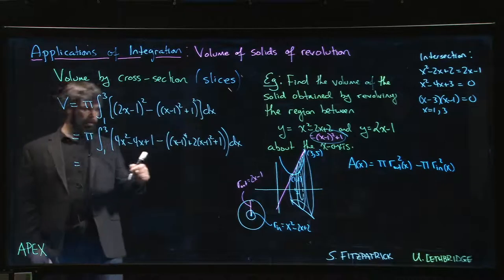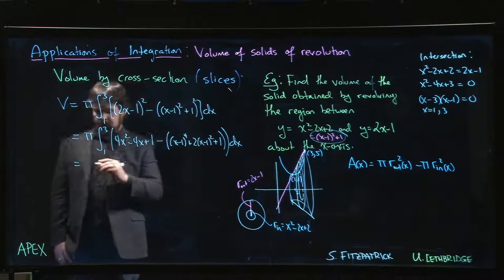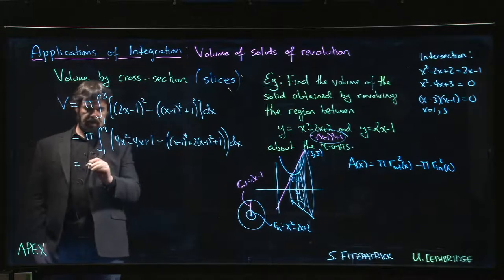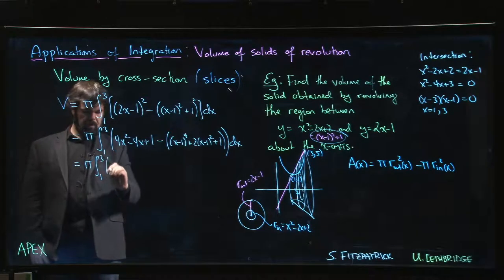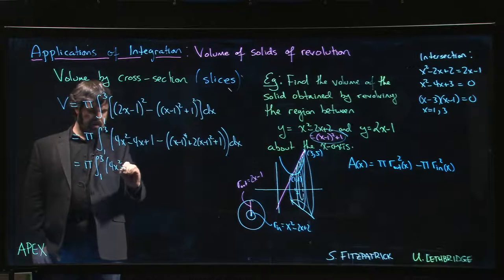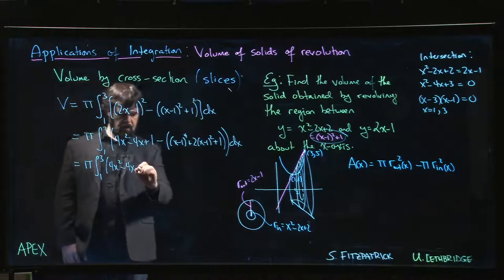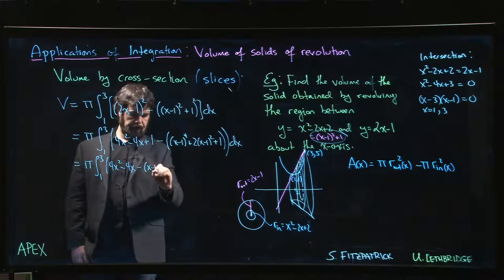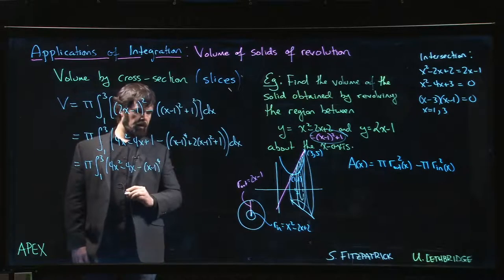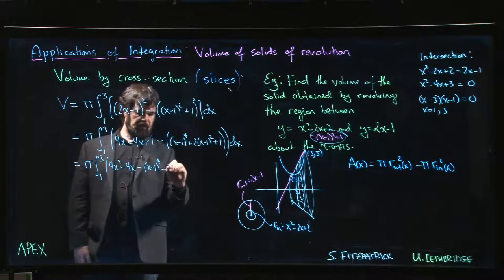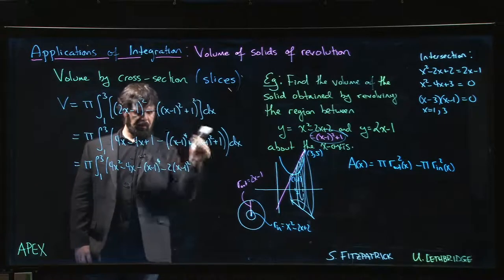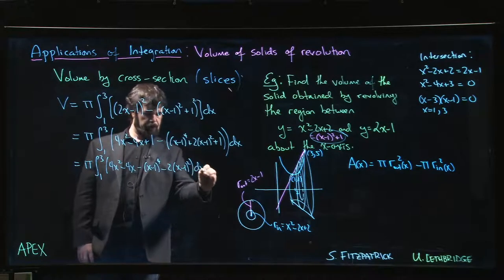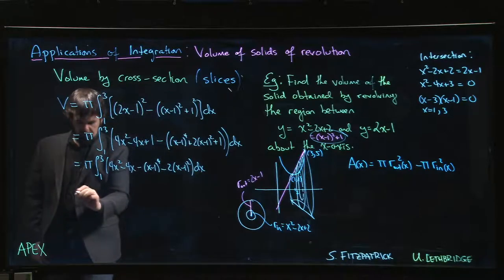Cross term is 2 times (x minus 1)² and then 1 squared. Okay, so we can, I know, let's simplify a little bit. I'm going to leave these as they are, right, because we know how to integrate that using power rule and a simple substitution that we don't even bother to write down. So we have the integral from 1 to 3, 4x² minus 4x minus (x minus 1) to the fourth minus 2 times (x minus 1)², the ones cancel.